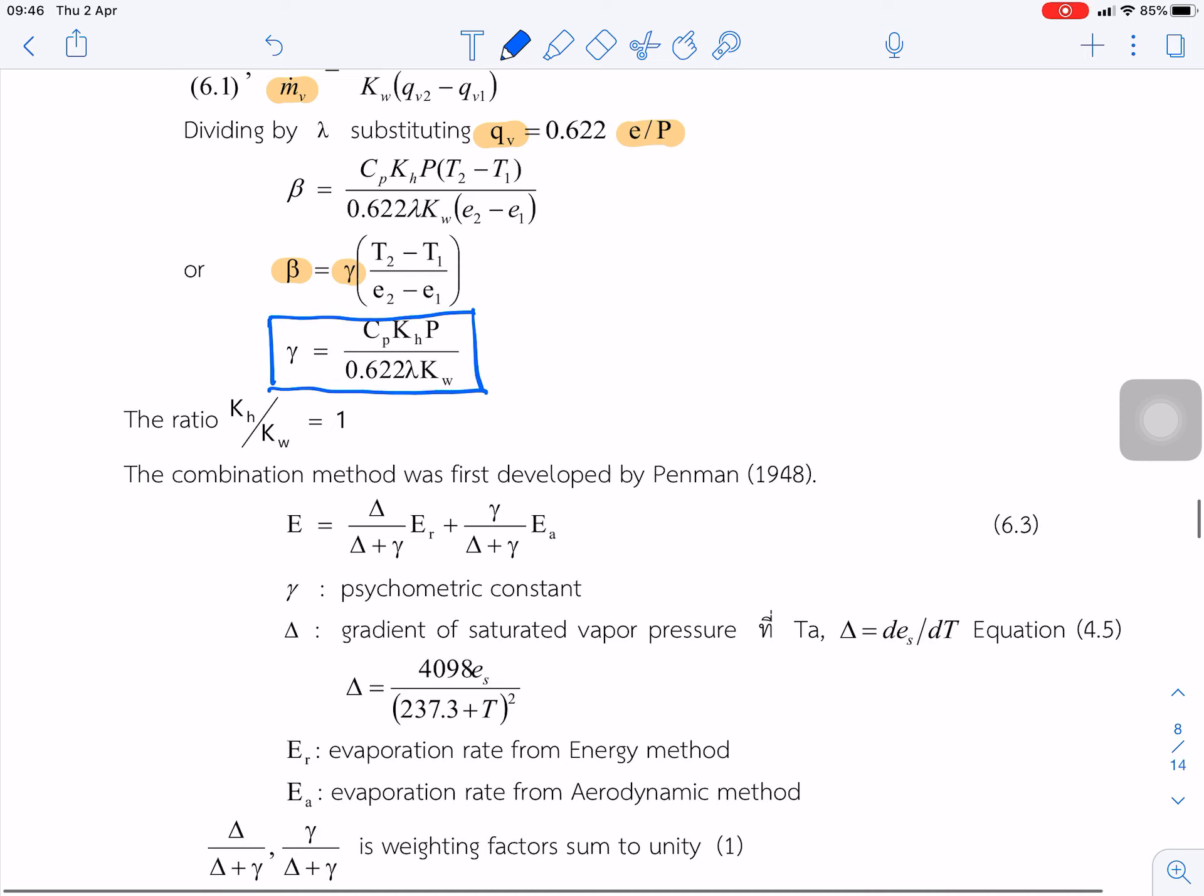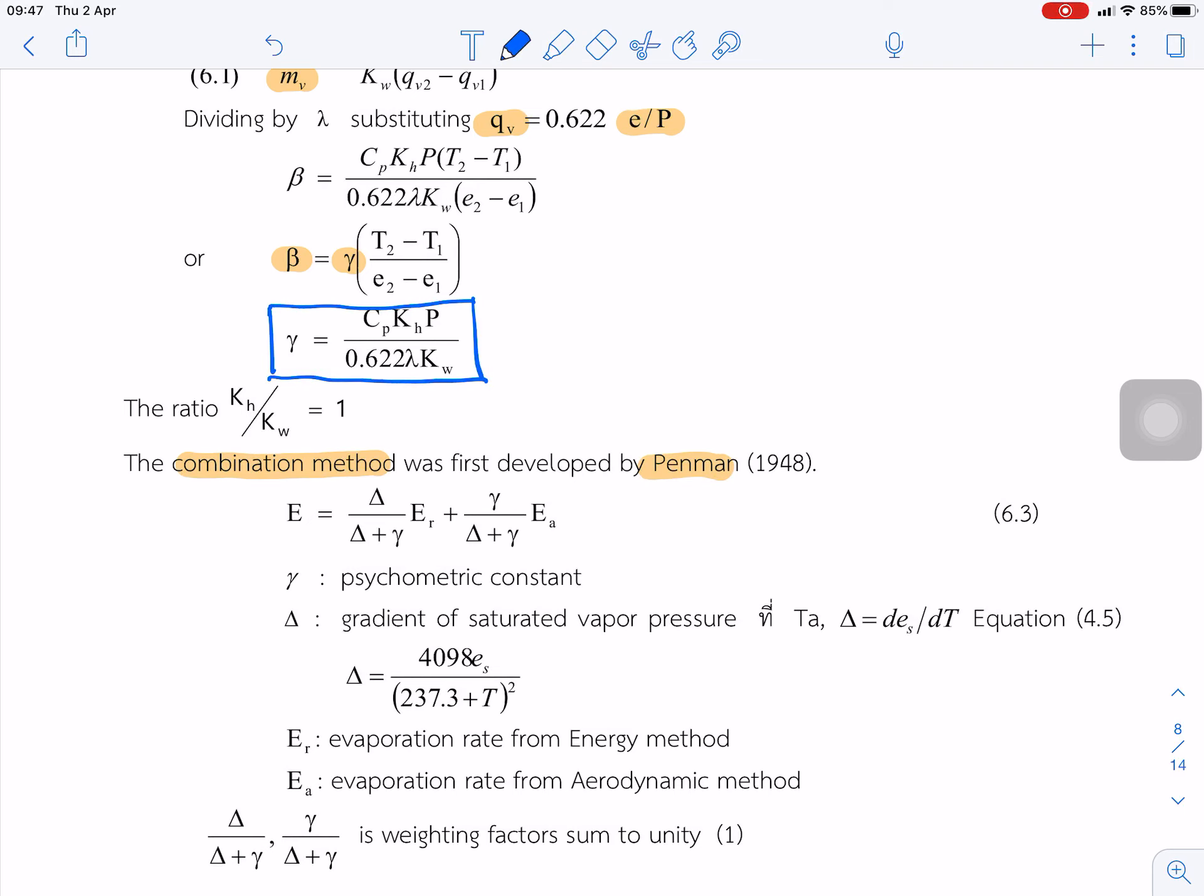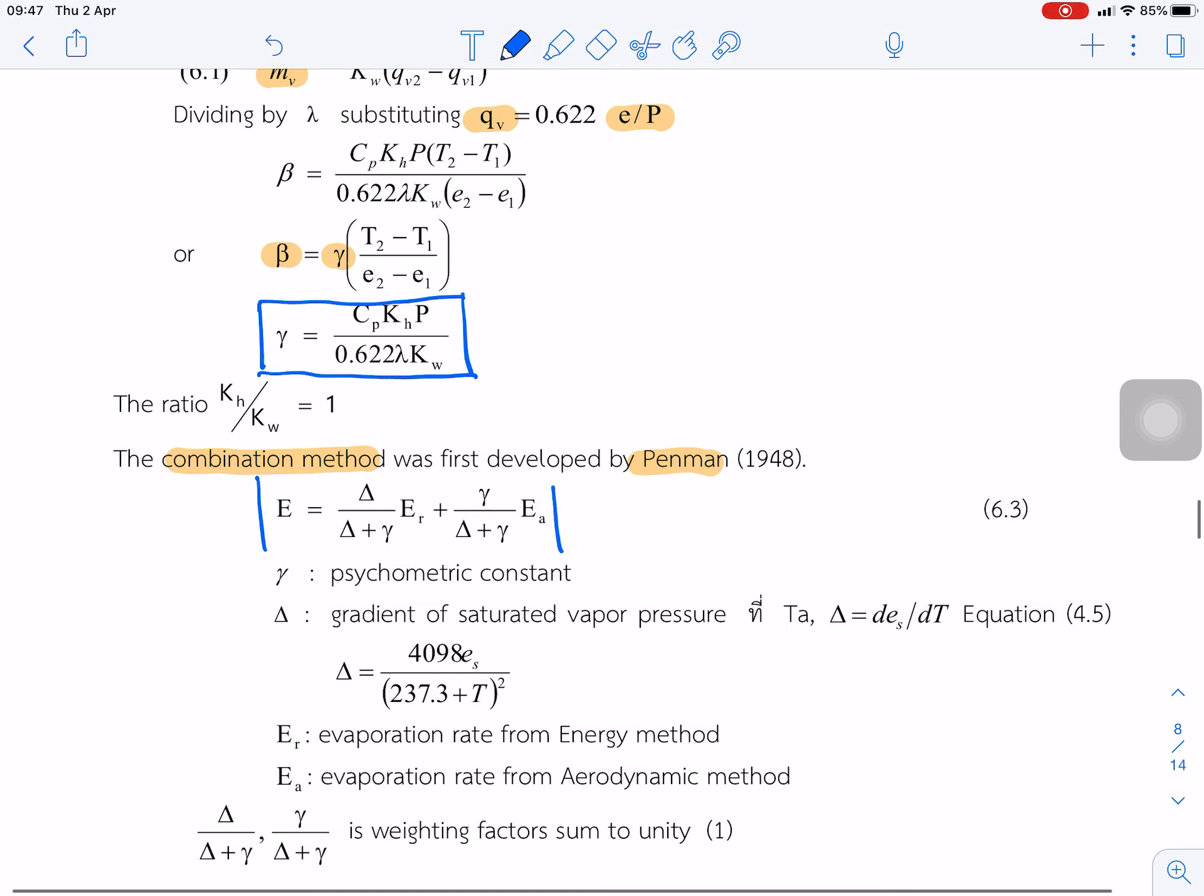The combination method was first developed by Penman in 1948. So this is the equation for the combination method. Gamma, this gamma from above is a psychrometric constant. And this delta is gradient of saturated vapor pressure. It's from lecture number 4, from this equation.